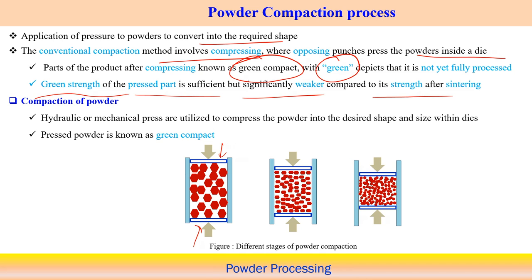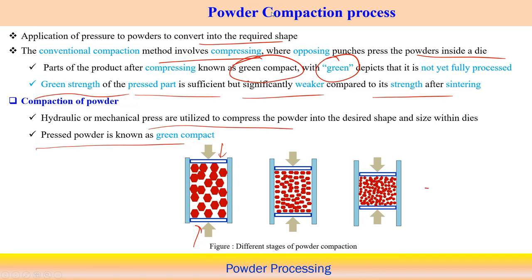A hydraulic or mechanical press is utilized to compress the powder and achieve the desired shape and size as per the die dimensions. The pressed powder is known as green compact. We can observe how compaction evolves with application of the compressive load.